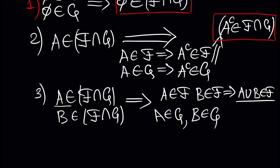Why is A inside G? Because A is inside this intersection, and that's why A is inside G. Why is B inside G? Because B is inside the intersection, which means B must be inside G. But if A and B are both inside G, it means their union must also be inside G, because G is a sigma algebra.